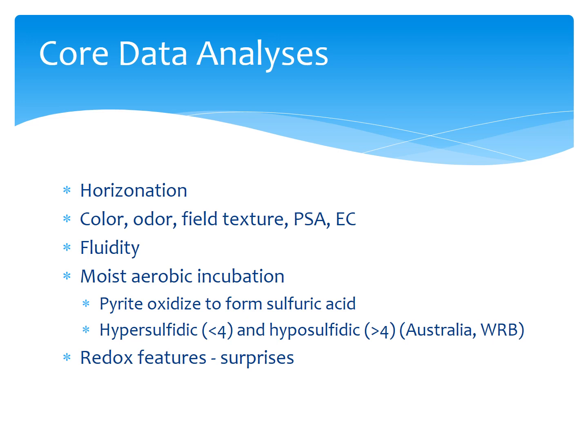We performed a variety of data analyses on these cores. We did horizonation via any differences we could see, feel, or smell. We recorded Munsell colors, odor — looking for hydrogen sulfide or petroleum — and field textures. In the lab, we did particle size analysis and electrical conductivity. We recorded fluidity, which is when you take a handful of the material and squeeze it — if most or all of it flows through your fingers, it's moderately or highly fluid. We did moist aerobic incubations: you measure the pH of a sample and allow it to oxidize over 8 to 16 weeks, measuring pH occasionally. Reduced sulfur compounds will form sulfuric acid as they oxidize. This gives an integrated measure of what happens to samples if they're exposed or disturbed. We classified materials as either hypersulfidic, where the pH drops below 4, or hyposulfidic, where the pH drops but stays above 4 — used in the Australian soil classification system and the WRB, though not yet adopted in U.S. soil taxonomy.